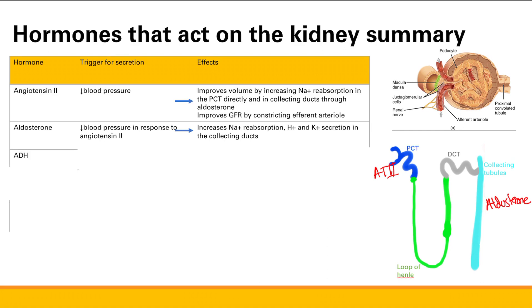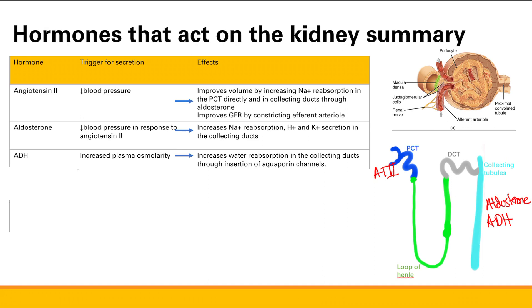Next is ADH. What is the trigger for ADH? The trigger for ADH is increased plasma osmolarity — not blood volume, not decreased blood pressure — it's increased plasma osmolarity. Remember, osmolarity and water are so closely related. Water follows osmolarity. If you have increased plasma osmolarity, you want to decrease that and get that water back into the blood — that's why you get ADH. How will ADH work? It works on the collecting ducts, increases aquaporin channel insertion, and thus increases water reabsorption.